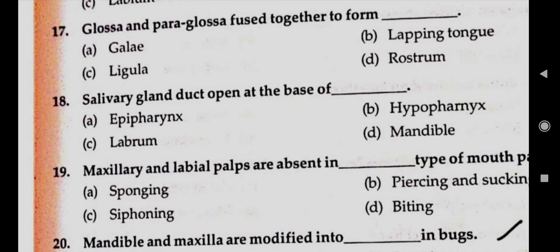Question number nineteen: maxillary and labial palps are absent in dash type of mouthparts. Answer B, piercing and sucking type of mouthparts. Question number twenty: mandibles and maxilla are modified into dash in bugs. Answer A, stylets.